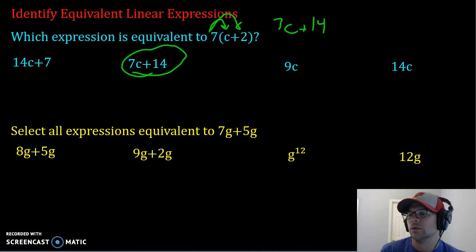Now it's not going to be 9c or 14c because you do not add the 7 and the 2 and then bring the c with it. You do not multiply just the 7 and the 2 to get 14. You have to multiply it to everything on the inside.